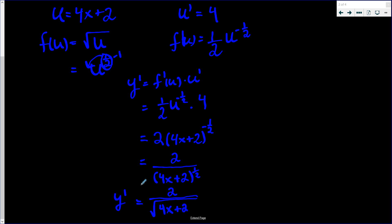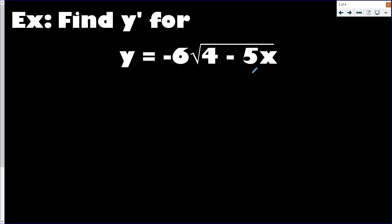A lot of students starting out like writing the u down, then f(u), then taking each derivative and multiplying — it's easy to remember and you don't need to memorize the rule explicitly. But I always tell my students it's much better to get to the point where you can do the chain rule mentally. Especially since sometimes you'll have a chain rule within a chain rule, or a chain rule inside a product or quotient rule.